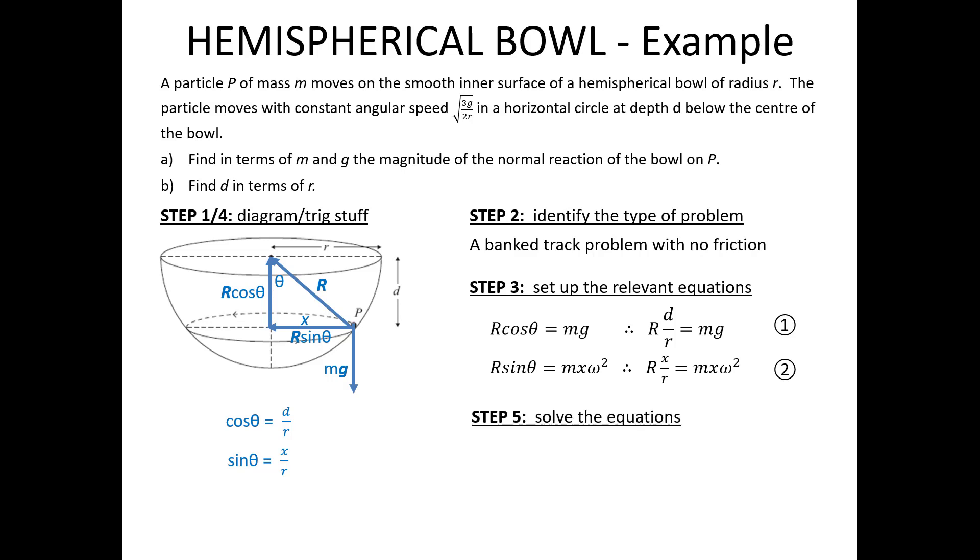And finally, I solve the equations I've got. I've chosen to rearrange the second one to get a value for r. Notice that I've substituted in what I know omega is. I've got omega as root 3g over 2r. So there is omega squared down there. And I get quite a simple algebraic expression for r. I then substitute that into equation one. And then I cancel out the m's top and bottom, cancel out the g's, and end up with d equals 2r over 3.